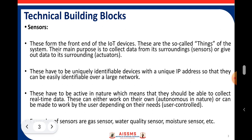These are called as the things of the system. The main purpose is to collect data from the surrounding or to give data to its surrounding. The data collection work is done by the sensors. These have to be uniquely identifiable devices with a unique IP address so that they can be easily identifiable over a large network. Each and every sensor or actuator has a unique ID so that it can be tracked very easily, whether deployed in a wireless sensor network or monitored remotely. That's why unique identification is needed for the sensors.